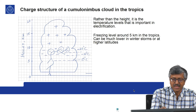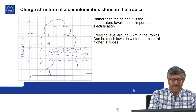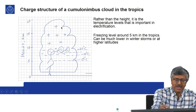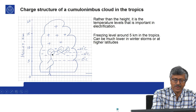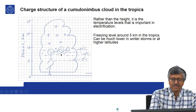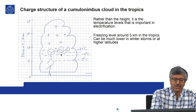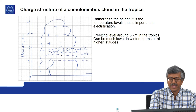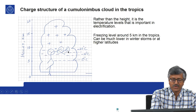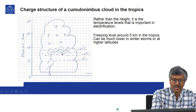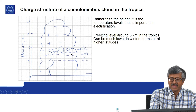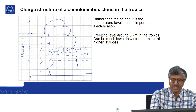This picture shows the charge structure in a cumulonimbus cloud in the tropics. On the top there are positive charges and at the bottom there are negative charges. We will not go into details on how these charges are produced, but it is enough to understand that most lightning originates from around the negatively charged region. Rather than height, it is the temperature levels that are important in the electrification — you need to be above the freezing level.